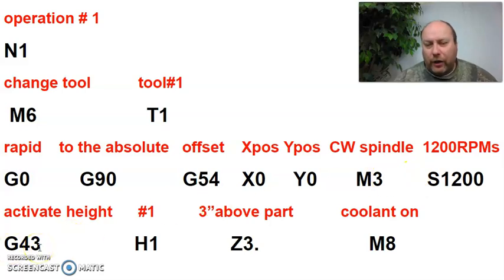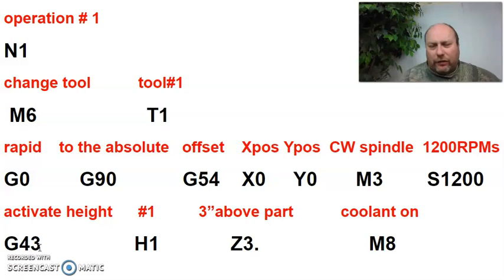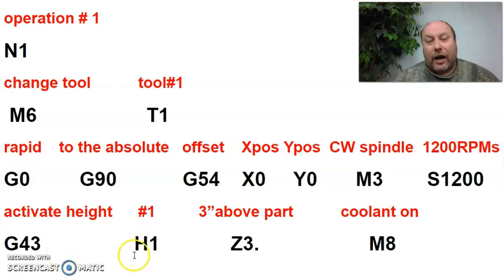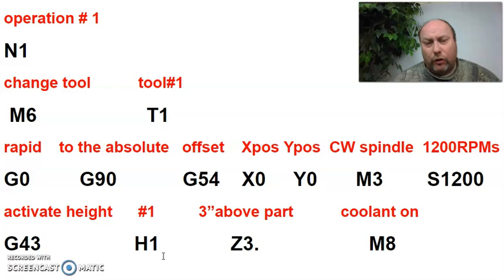Line four is G43. In the simplest terms: you're saying I want you to activate a height. Remember, each tool has a different length and offset. You're activating a certain height — a height of what? H1. H1 is the height of tool one. It doesn't have to match, but it's very customary to match T numbers and H numbers until you get into more advanced machining. I always keep my T's and H's matched up. You'll know you can use heights and tools differently, but that's more advanced.